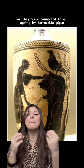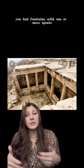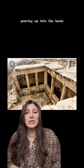The usual form of a fountain was a fountain house, which means that on agoras you had fountains with one or more spouts, and the water was running through them constantly, pouring into the basin, and those spouts were covered by a portico.